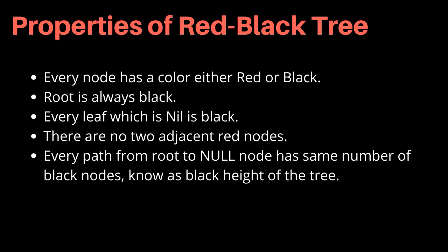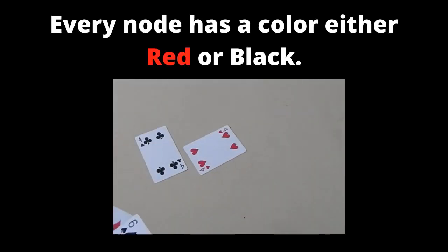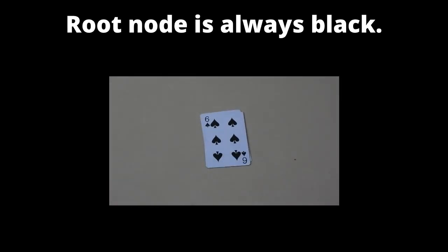A red-black tree is a binary tree that satisfies the following red-black properties. 1. Every node is either red or black. 2. The root is black.